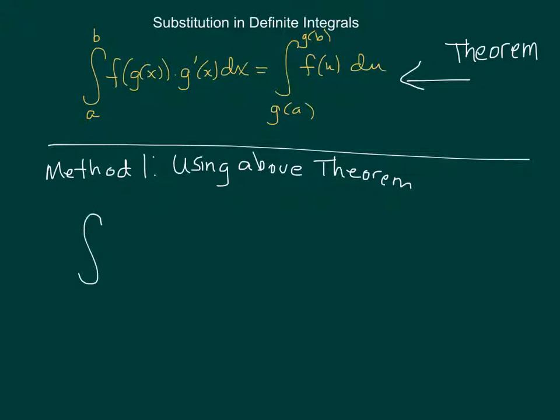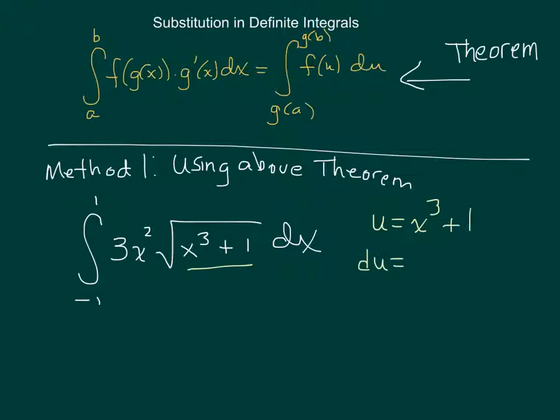All right, so method one using the above theorem. So I have, I want to find the area under the curve from negative one to one of 3x squared times the square root of x cubed plus 1 dx. So right away you can see that you have something going on with a chain rule, two pieces here, this product of these two functions, so I know I'm going to need to do some substitution. So I'm going to do that over here on the side. I'm going to let u equal what's under my square root, x cubed plus 1, so then du, the derivative with respect to x, would be 3x squared dx, which is nice because you see that's that piece right there.